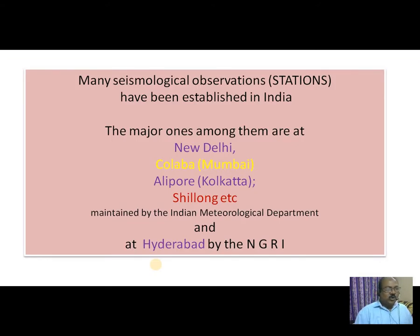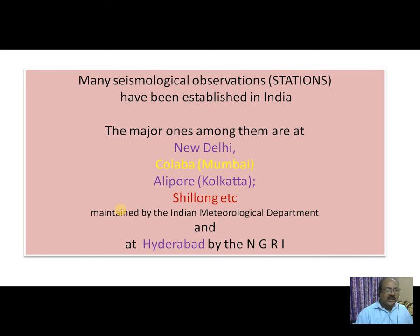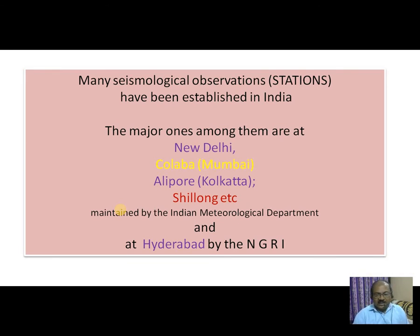There are many seismological observation stations in India. The major ones are located at New Delhi, Mumbai, Kolkata, and Sri Lanka, and all these are maintained by the Indian Meteorological Department. Whereas NGRI — National Geophysical Research Institute — is maintaining a seismological station at Hyderabad.